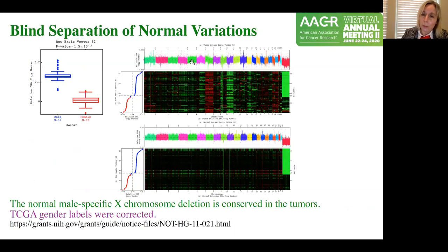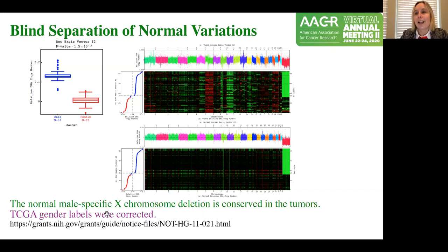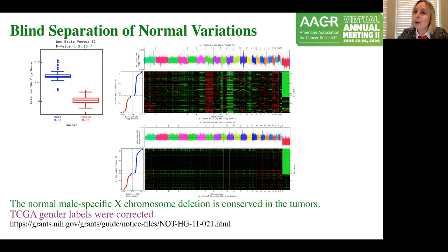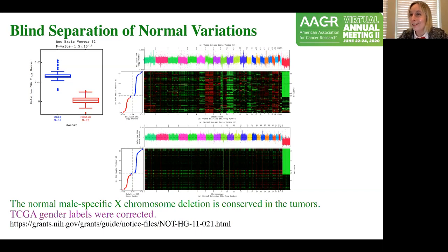We also separate the normal variations without knowing them in advance. Specifically, we can see we're separating the X chromosome deletion relative to the autosome in male patients. This normal genotype-phenotype relationship is uncovered by the GSVD as common to the tumor and normal data sets, separating to its own wavelength. We don't have to remove the X chromosome or any other part of the genome before analysis. We truly analyze the whole genome — which enabled us to correct some gender labels in TCGA.